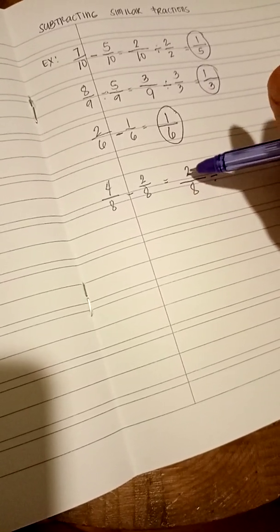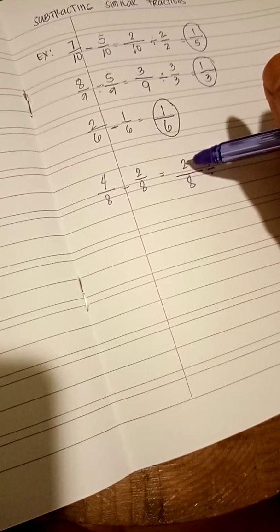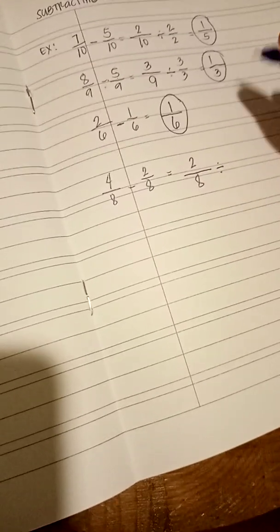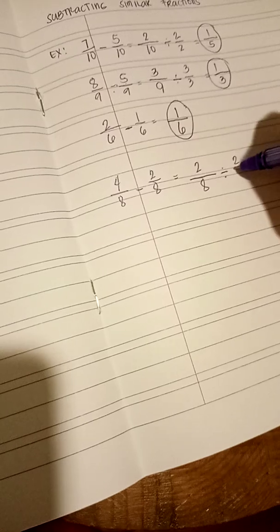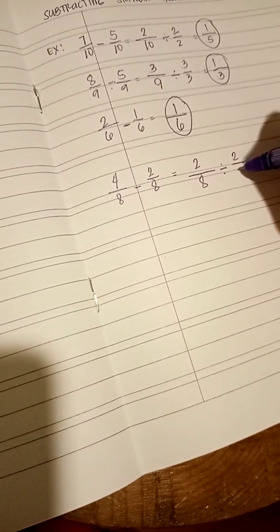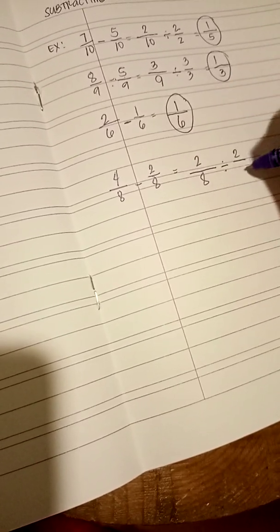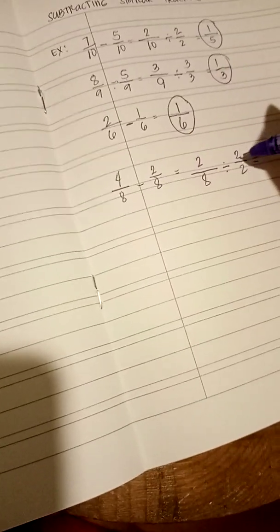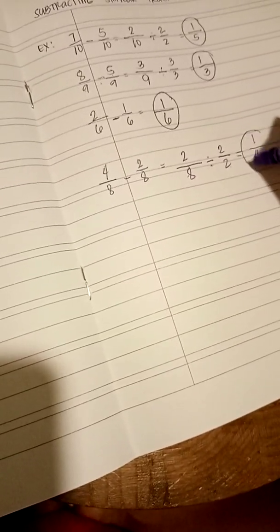If you divide something on the numerator, same number you should divide in the denominator. So, 2 divided by 2 equals 1. And 8 divided by 2 equals 4.